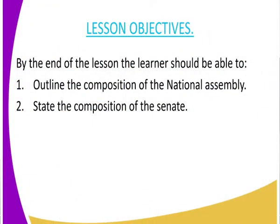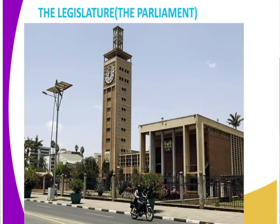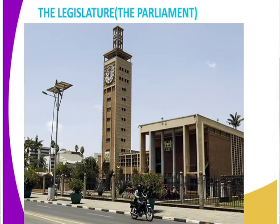By the end of the lesson, we expect to be able to outline the composition of the National Assembly and also the composition of the Senate. The legislature is the law-making arm of the government, and it has two arms: the National Assembly and the Senate. This is also known as Parliament — our Kenyan Parliament — which has these two houses.